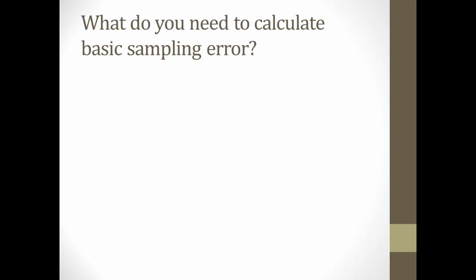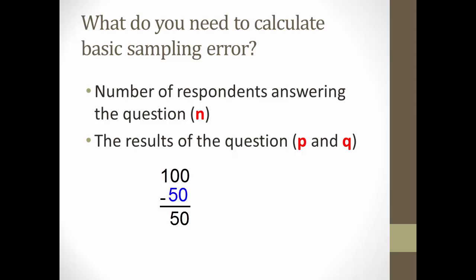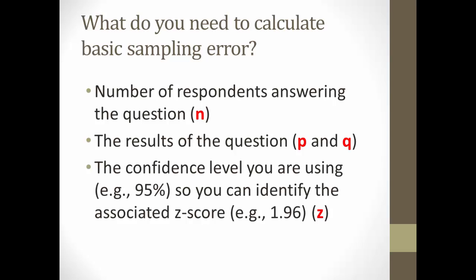To calculate sampling error, you'll need to know the number of respondents answering the question, which we identify with little n. The results of the question, p and q, such as 50 and 50, or 30 and 70, and this refers to the study results. If 50% answered yes to a question, that 50% is subtracted from 100%, leaving 50% who did not answer yes to the question. Alternatively, if 30% answered yes, or p, that means that 70% did not answer yes, or q. And you'll also need to know the confidence level you are using, for example, 95%, so that you can identify the associated Z-score, again, for example, 1.96.